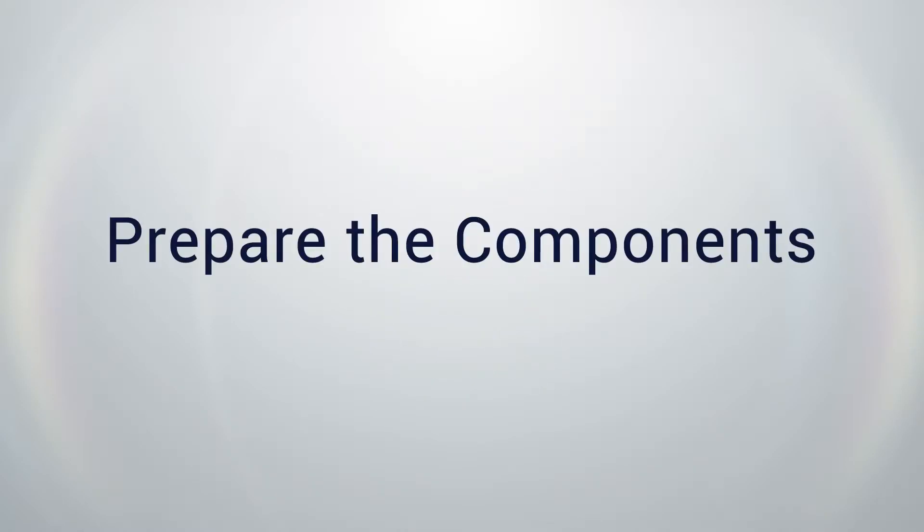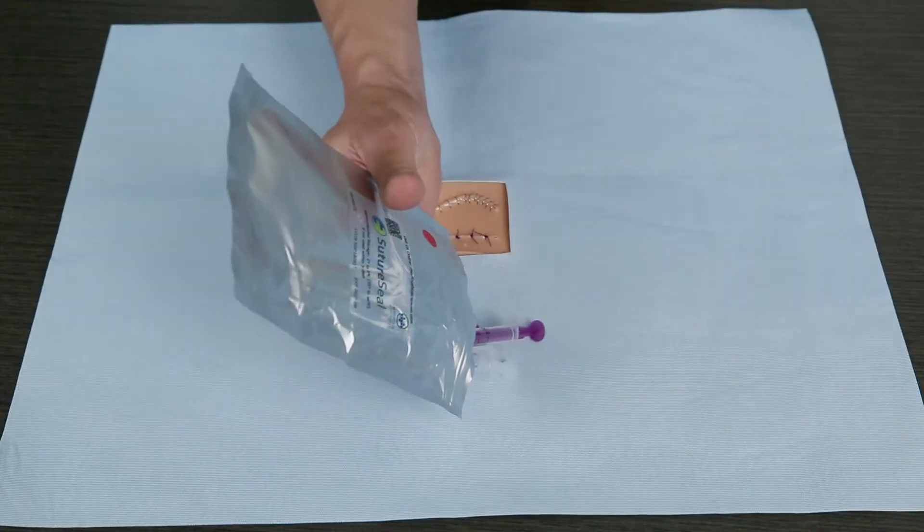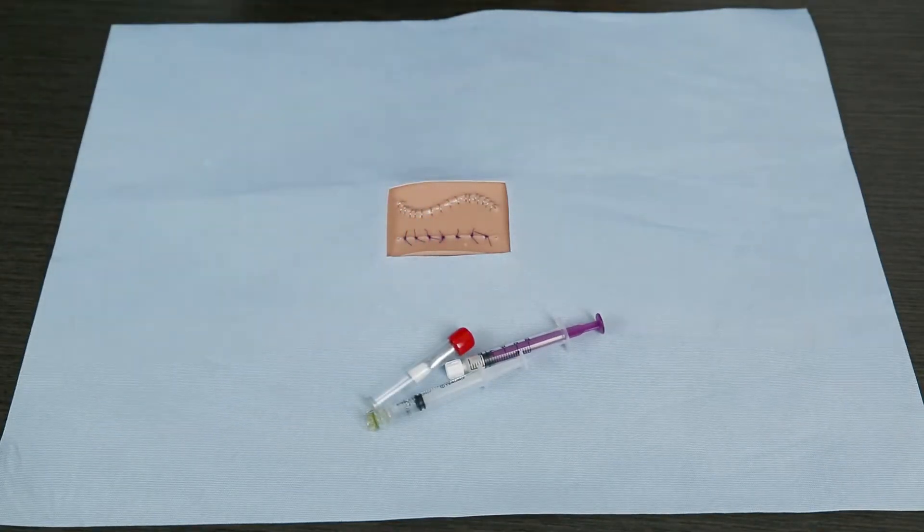One, prepare. Two, mix. Three, apply. The first step is to prepare the components. Open the foil pouch and remove the three components: two syringes and a tube case containing the application brush.